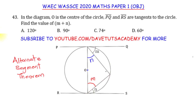And if this is a diameter, then this angle here is going to be a right angle — because it is the angle subtended at the circumference by the diameter of a circle. Or you can say the angle at the center is 180 degrees, and the angle at the circumference is half of that, so this angle is half of 180, which is 90 degrees.